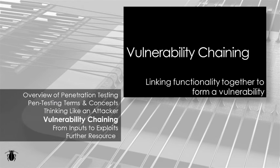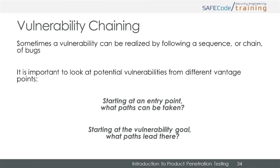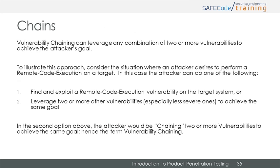Now let's look at an important concept: how attackers string together sets of functions and bugs to create a security vulnerability. Vulnerability chaining is the use of a sequence or chain of bugs and functionality in order to arrive at one or more vulnerabilities. Effectively navigating vulnerability chains is a matter of taking two different vantage points: start at the attacker's beginning state and see where they can go from there, and start at the attacker's desired end state and see what leads there. An attacker may use vulnerability chaining to exploit two or more relatively easier vulnerabilities and combine them to accomplish a goal that would otherwise be too complicated.